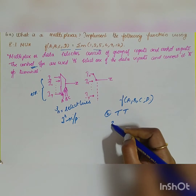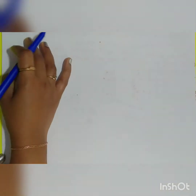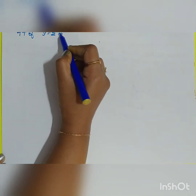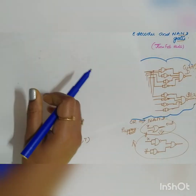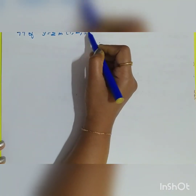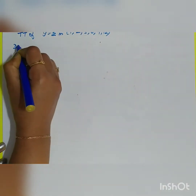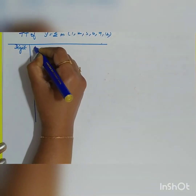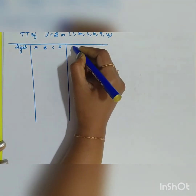The second step is to construct the 8-to-1 mux. Now let us move to the first step: construct the truth table of Y equal to the sum of minterms 1, 2, 5, 6, 9, 12. The truth table columns are: digit inputs A, B, C, D, and output Y.